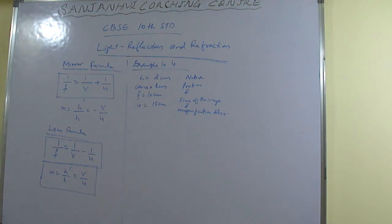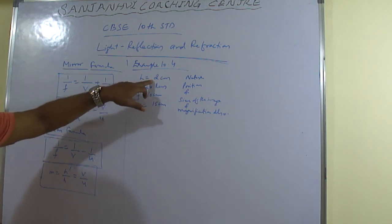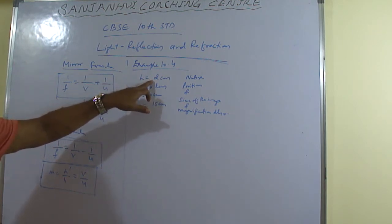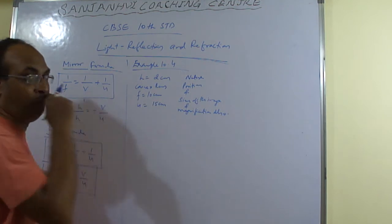So now, as you are knowing that this is convex lens, height is 2 cm, so it is positive. Focal length, in concave it was minus? Yes sir. In convex lens focal length will become plus.